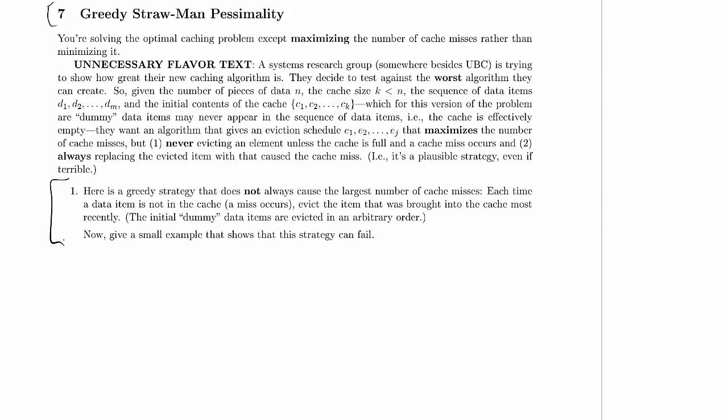Here's a greedy strategy that does not always cause the largest number of cache misses. So this is the strategy we're going to critique, presumably. Each time a data item is not in the cache, so a miss occurs, evict the item that was brought into the cache most recently.